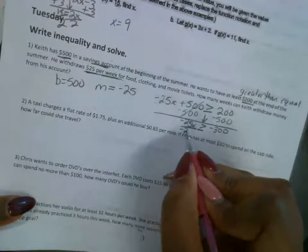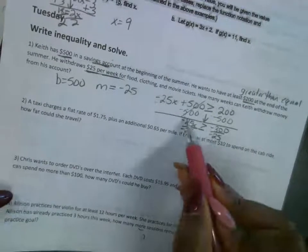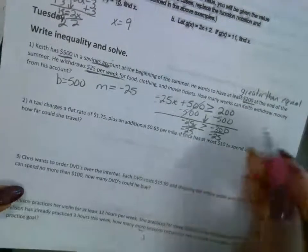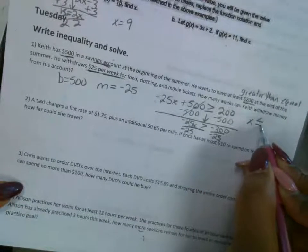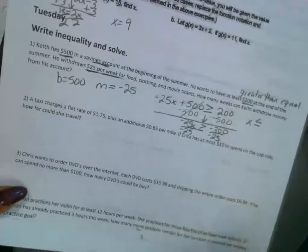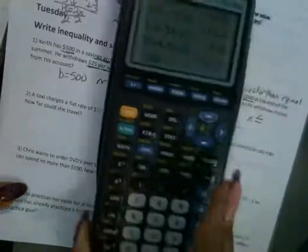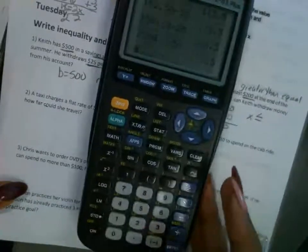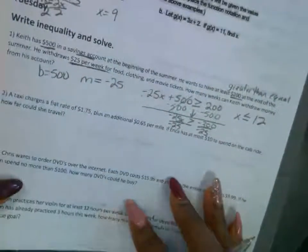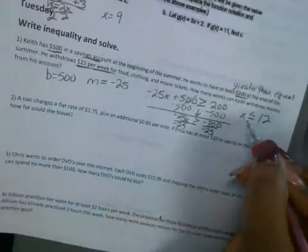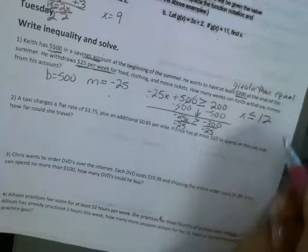And then this is going to give us a negative $300. We're going to divide both sides by negative $25. So a negative divided by negative is positive, so this is going to be x. The inequality here is going to flip. And then this is going to be a negative $300 divided by a negative $25 is going to be a positive 12.